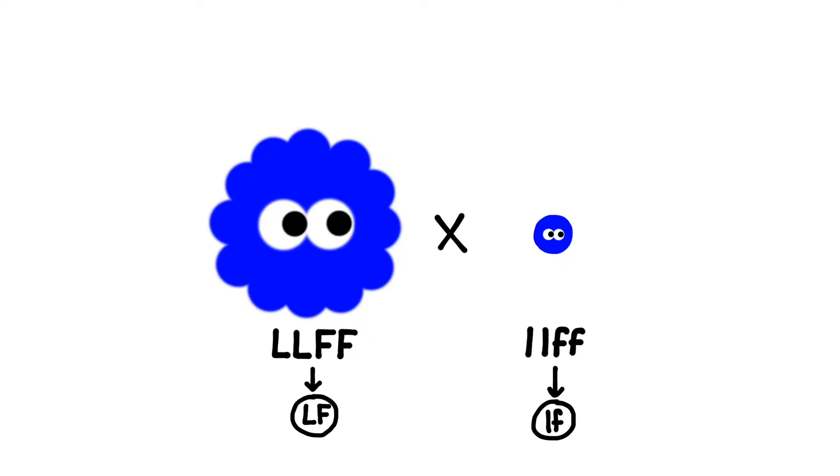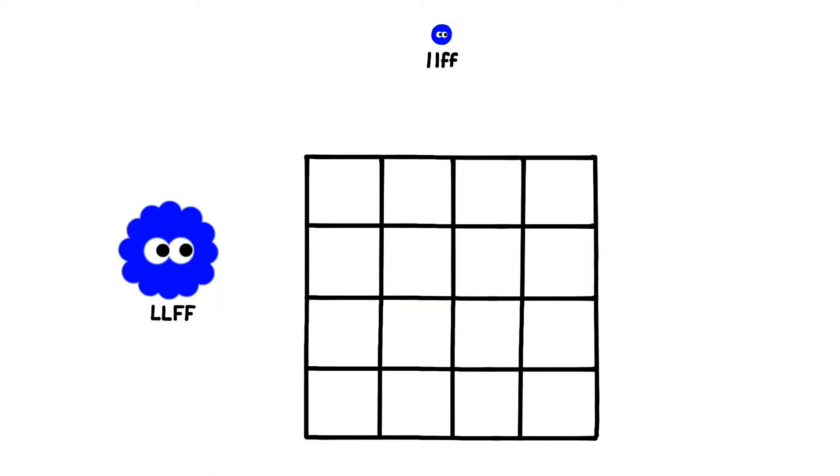The first dot can't contribute a small or a smooth allele, and the second dot cannot contribute a large or a fluffy allele. We could probably work out the genotypes that their offspring could have, but let's do a Punnett square anyway.